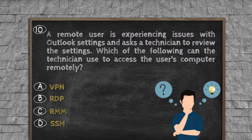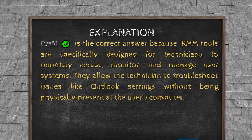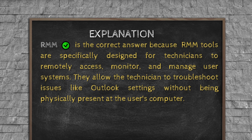Question number ten. A remote user is experiencing issues with Outlook settings and asks a technician to review the settings. Which of the following can the technician use to access the user's computer remotely? Option A, VPN. Option B, RDP. Option C, RMM. Option D, SSH. Explanation. RMM is the correct answer because RMM tools are specifically designed for technicians to remotely access, monitor, and manage user systems. They allow the technician to troubleshoot issues like Outlook settings without being physically present at the user's computer.